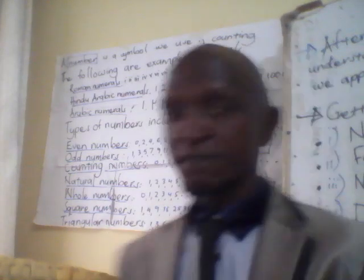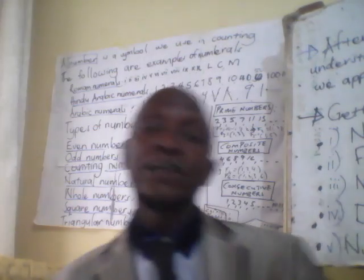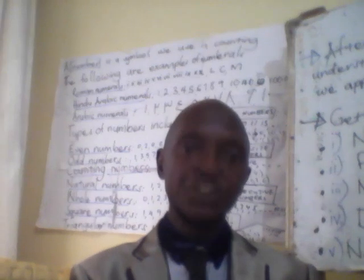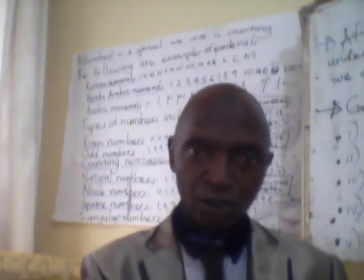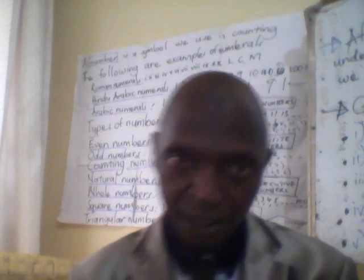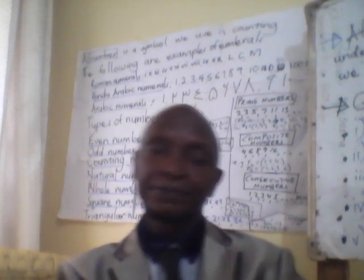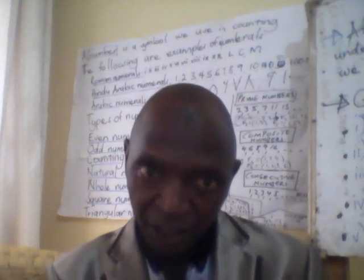We look at a number — a symbol we use in counting — and the following are examples of the numerals. We have what we call the Roman numerals, I hope you can see them very well on my white chart there. Then the Arabic numerals, how they are written. Then you can also have what we call the types of numbers — the Hindu-Arabic numerals.